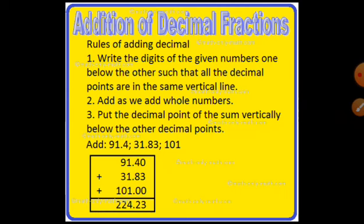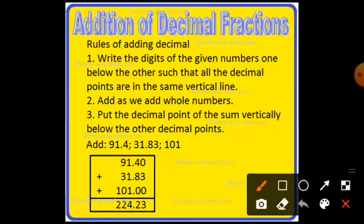Next, put the decimal point of the sum vertically just below the other decimal points. As you can see in the example given, three decimal numbers have been added. All the numbers have been placed one below the other in such a way that you keep the decimal point in the same straight vertical line. In the answer line also, you keep the decimal point in the same alignment, and the method of addition remains the same.